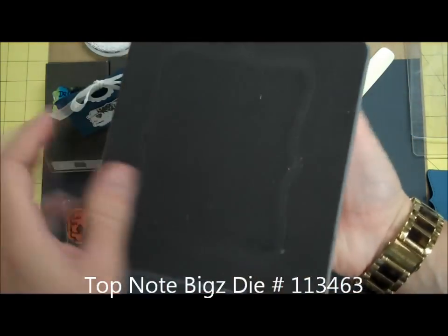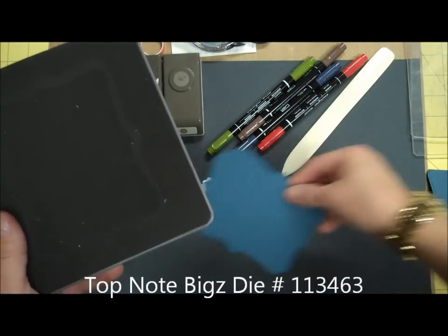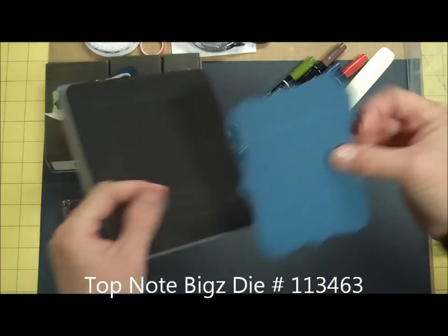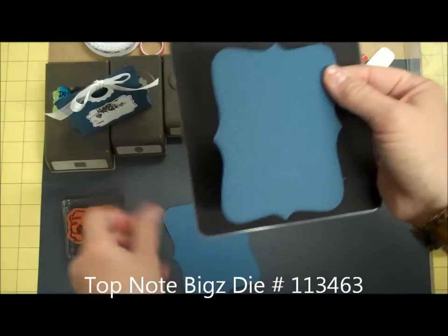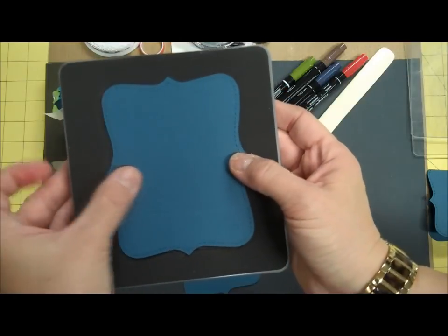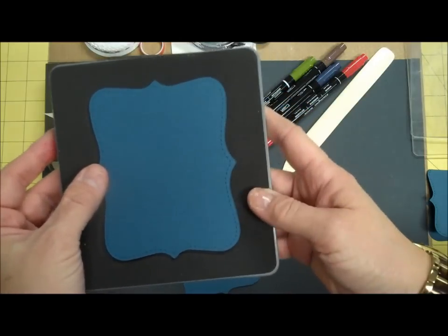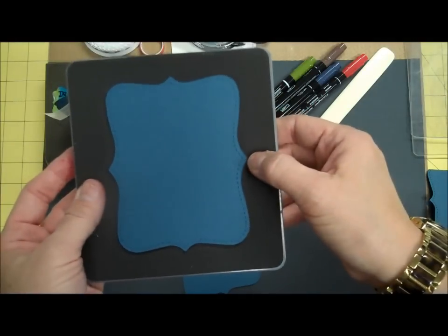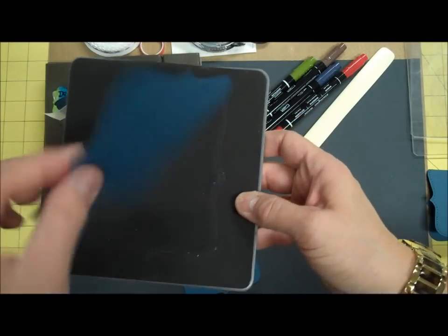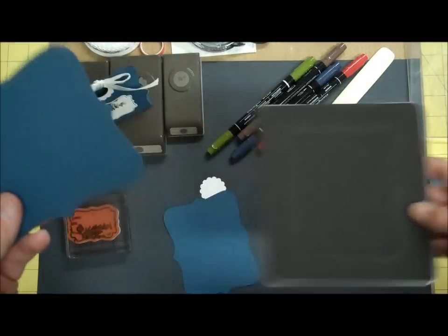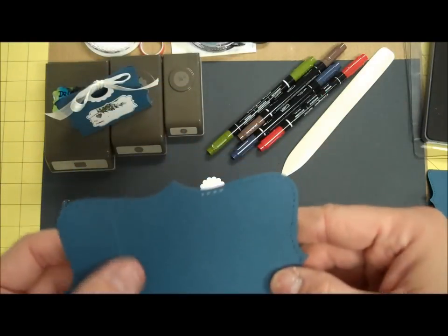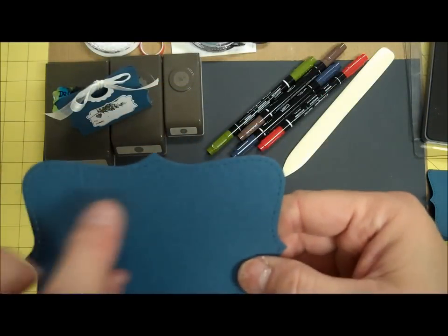my Biggs Top Note die. When you cut this out you'll get a shape that looks like this. This is a Biggs die, so you get a big actual, like here's my hand, you get a good size tag. You've probably seen these all around, people are making all kinds of things with these, so I had to play with it today.